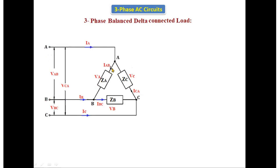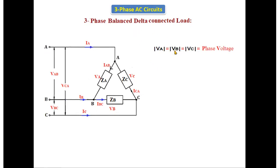The voltage across phase A is VA, the voltage across phase B is VB, and the voltage across phase C is VC. All are equal in magnitude because it is a balanced delta connected load — VA equals VB and VB equals VC. These voltages are called the phase voltages.